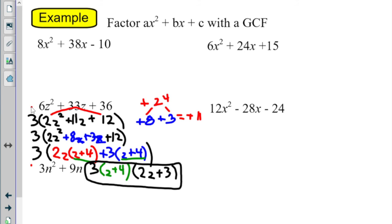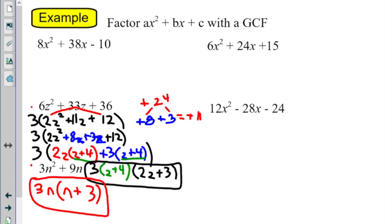Next example: 3n squared plus 9n. I'm going to look for what I can take out of all the terms. What number can come out of all those terms? The 3. Is there a variable in both of them — do we have an n in both those terms? Yes, so we can take an n out. When I take 3n out: I took the 3 out so no more number, take an n out but I still have an n left over. Plus, take an n out — no more n, but 9 divided by 3 is 3. And there is not an n squared anymore — I cannot factor that down any further. We're done. If you don't see the x squared or n squared in your term anymore, that's it — you're done with the problem.